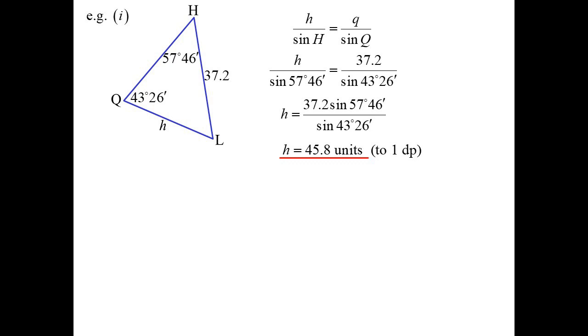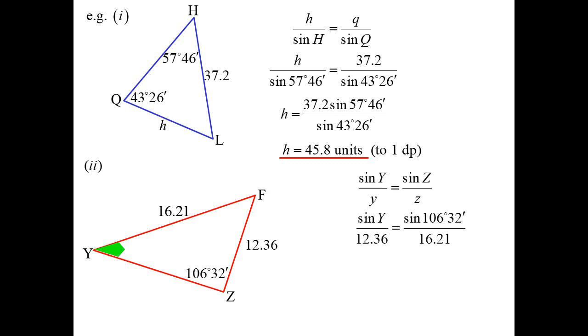Of course we could find the angle rather than a side. In that case I just turn the sine rule upside down and I'll have sine Y over Y is sine Z over Z, and substitute in, play around with that, and we get our angle of 46 degrees 58.